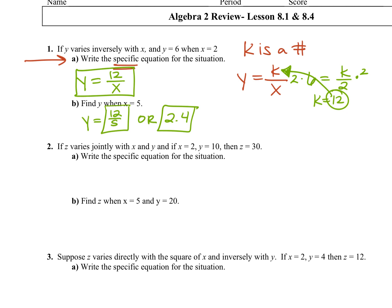When you hear varies, you need to write equals k, because that's how your equation is going to get set up. So number two, it says, I'm going to do it over here because this is not our specific yet. Z varies. You're going to write what? Equals k. Jointly is what? Multiplication. So jointly with x and y means x times y, and that's your general equation.